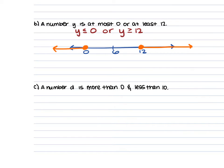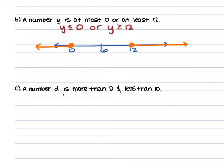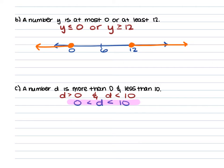For part C, a number d is more than 0 and less than 10. So d > 0 and d < 10. When separated using 'and,' the two signs point in towards each other, meaning the line connects between two circles. We can rewrite this as 0 < d < 10. When graphed, we have open circles on 0 and 10, and since it's an AND statement, the line connects between the two circles.